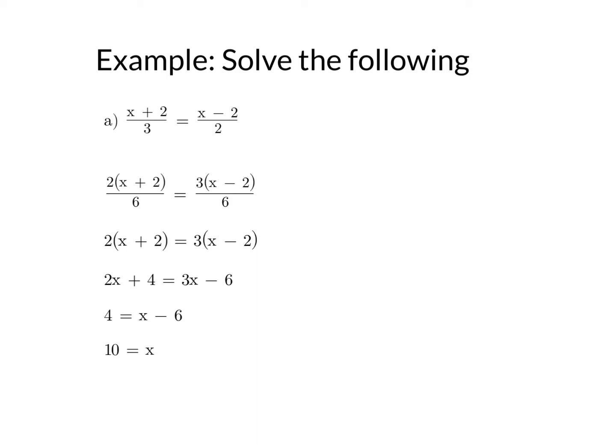Now I can solve normally. Expand the brackets, and I get 2x plus 4 equals 3x minus 6, subtract 2x from both sides, and I get 4 equals x minus 6, add the 6, and we get x equals 10.